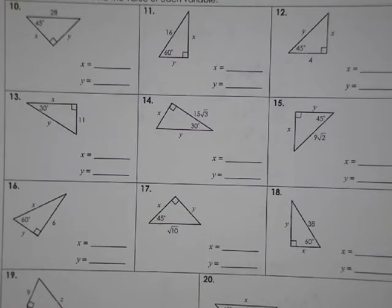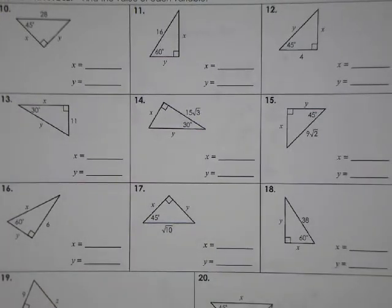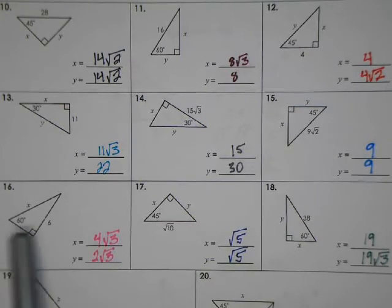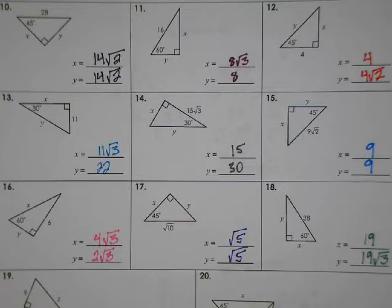The next set of problems is a mixed practice where you need to identify the lengths of indicated sides according to the rules. Pause the video and work out as many of the nine problems as you need to feel comfortable. Then hit play and check your answers. Pay particular attention to problems 16 and 17 — on 16 you have to rationalize your fraction, and on 17 we're seeing something that doesn't have a square root of 2 or square root of 3 as part of the solution.